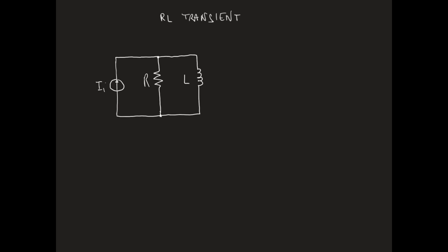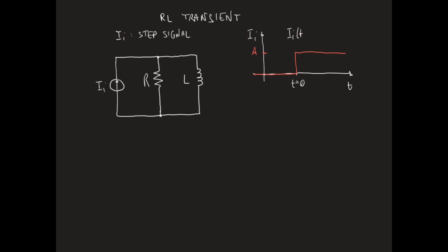Let us assume that the source Ii generates a step signal with an amplitude A. We will express Ii as a function of time as A times the step of T. We will also assume that the current IL flowing through the inductor at time T equal to zero is equal to zero.